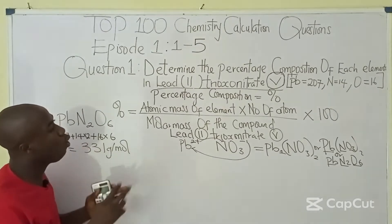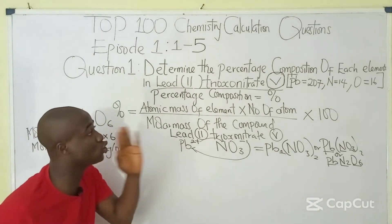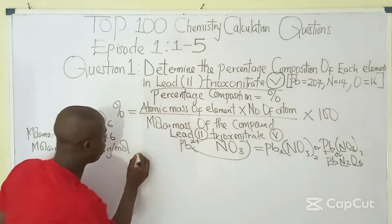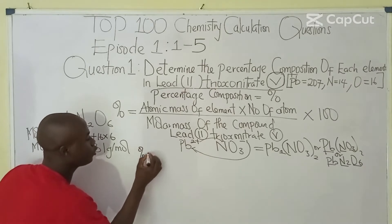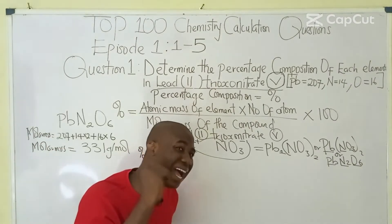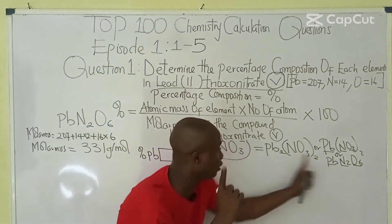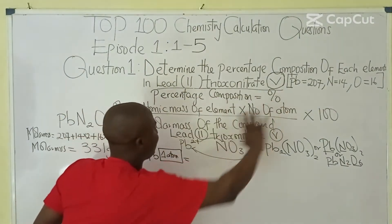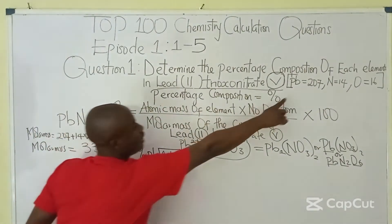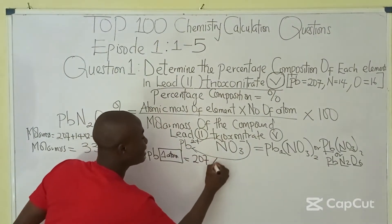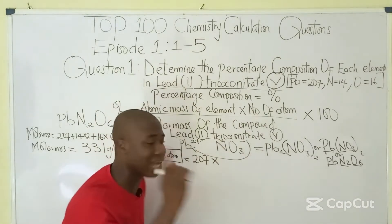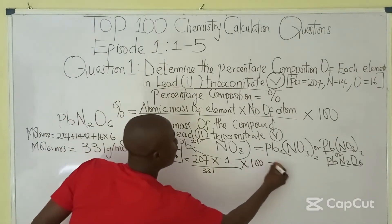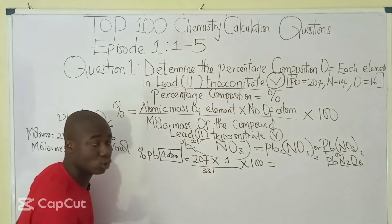After calculating the molar mass, we solve for the percentage composition of each element. Starting with lead (Pb): we have just one atom of lead in this compound. Applying the formula: 207 times 1, over 331 g/mol, times 100.